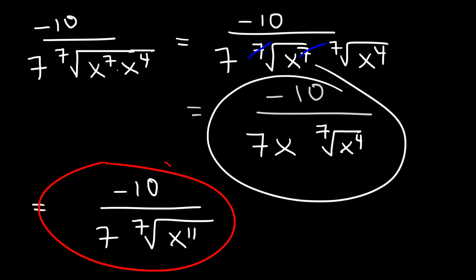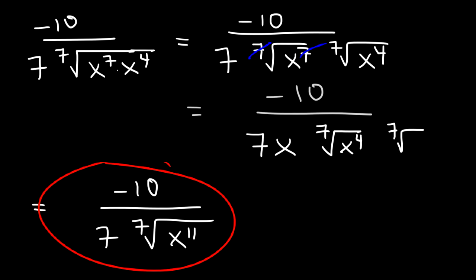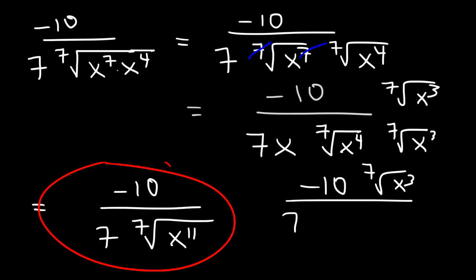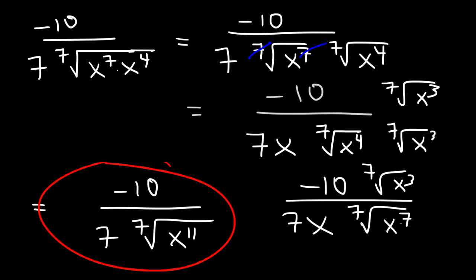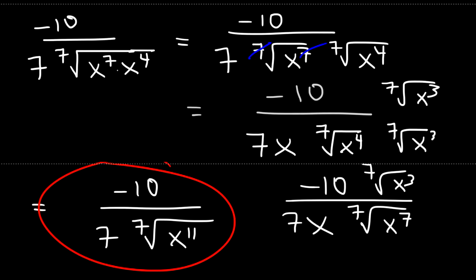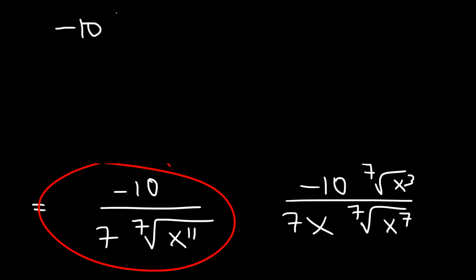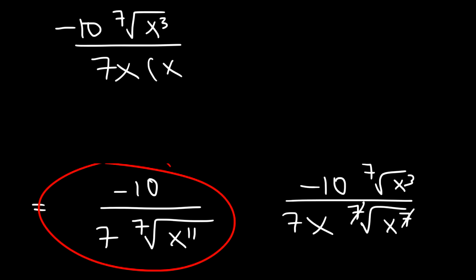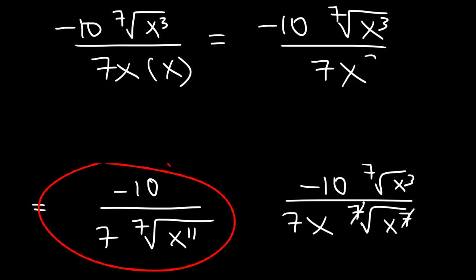If you want to rationalize the expression, you can, though it's not necessary. You can multiply the top and the bottom by the 7th root of x cubed. So it's going to be negative 10 times the 7th root of x cubed, over 7x. Since x to the 4th times x cubed is x to the 7th, you have the 7th root of x to the 7th in the denominator, which simplifies to x. You can also write your answer as negative 10 times the 7th root of x cubed, divided by 7x squared, if you're told to rationalize any radicals in the denominator.